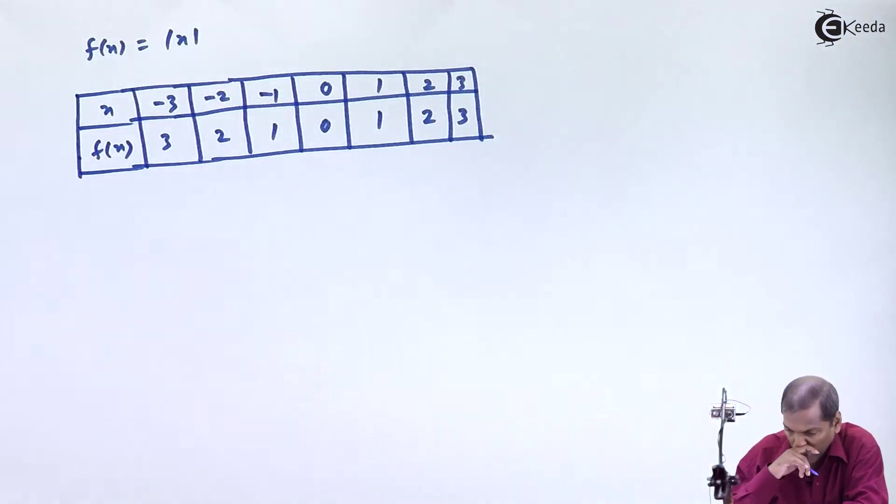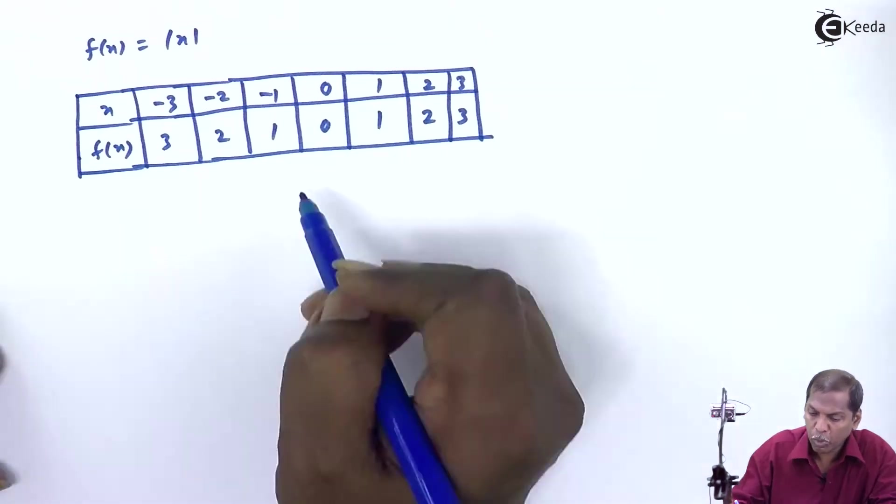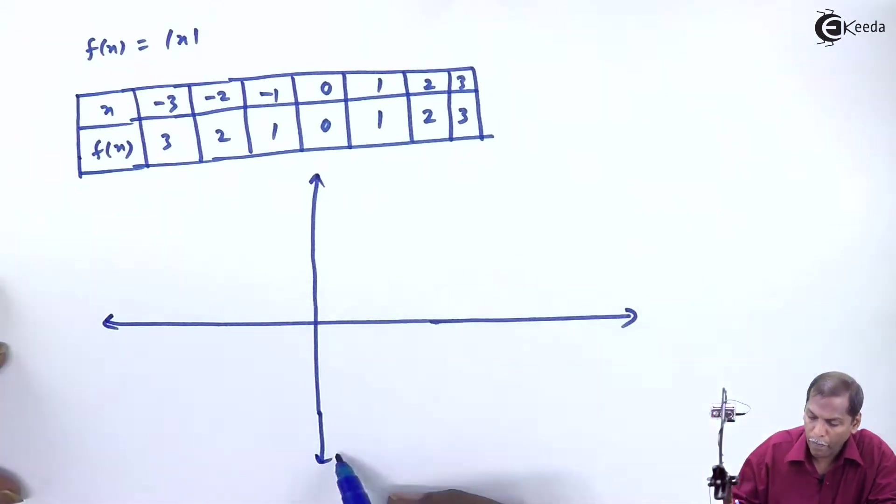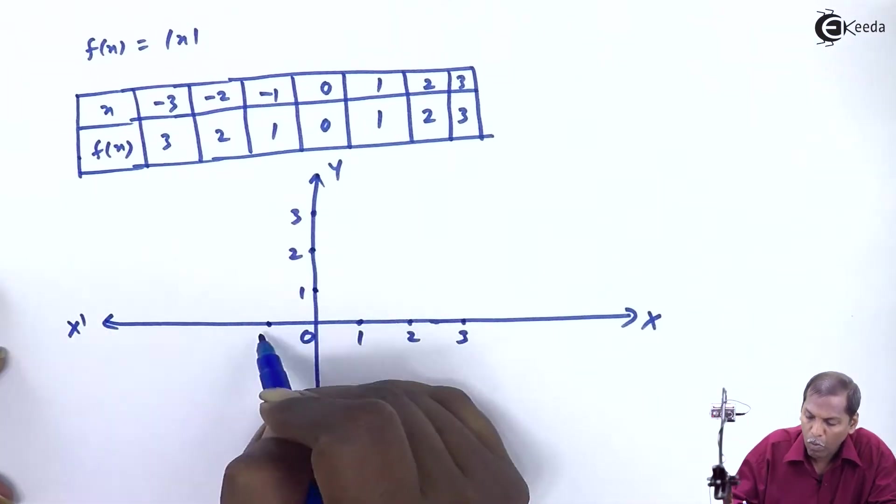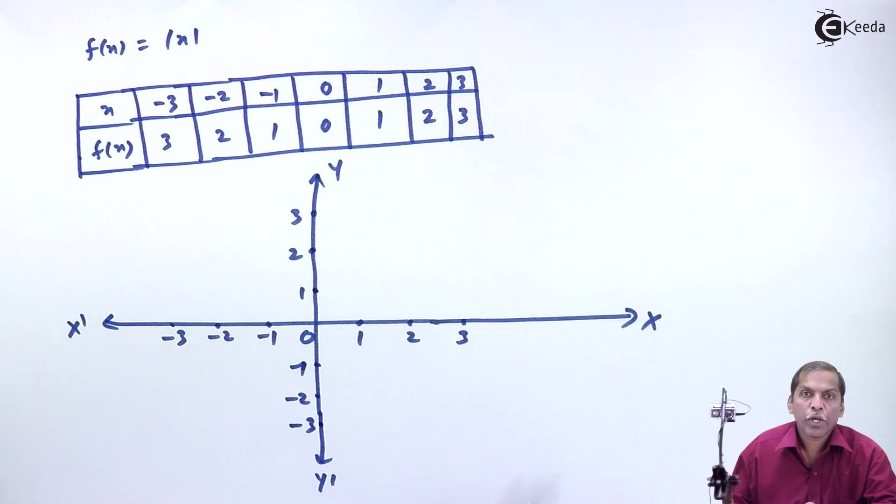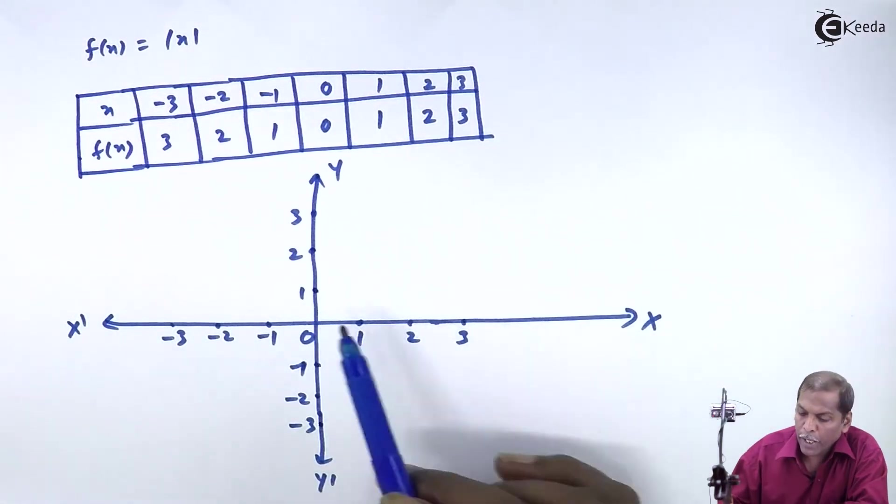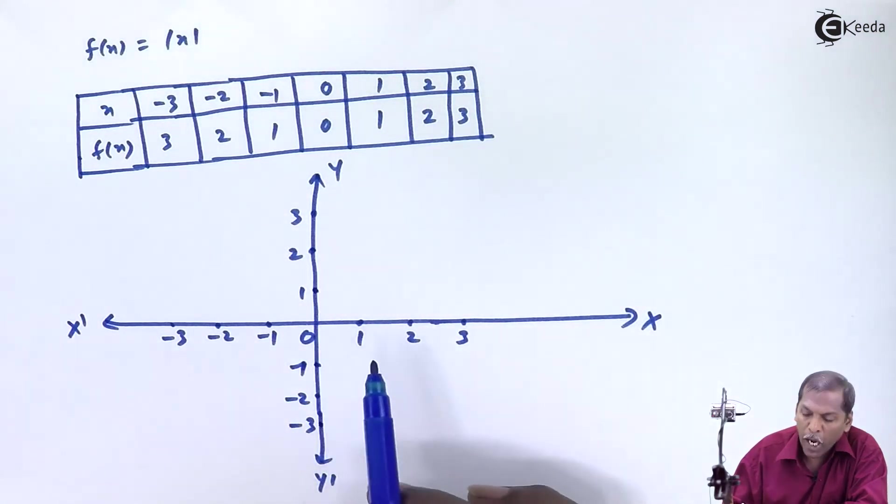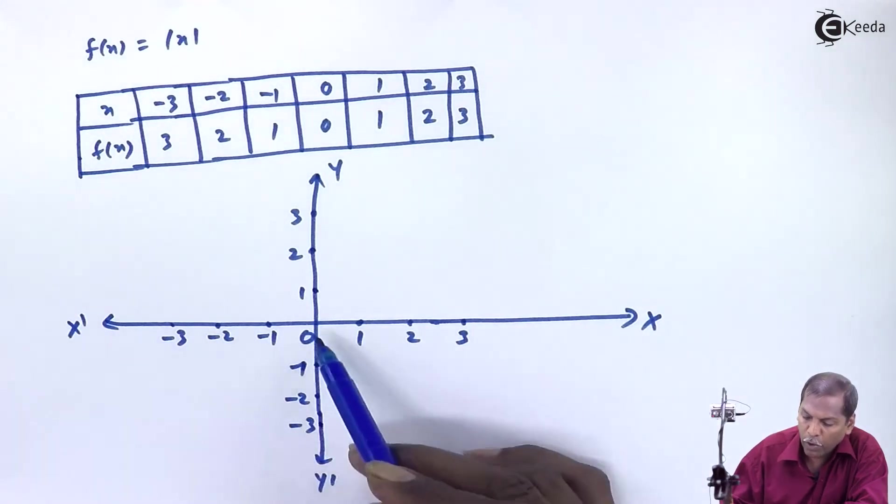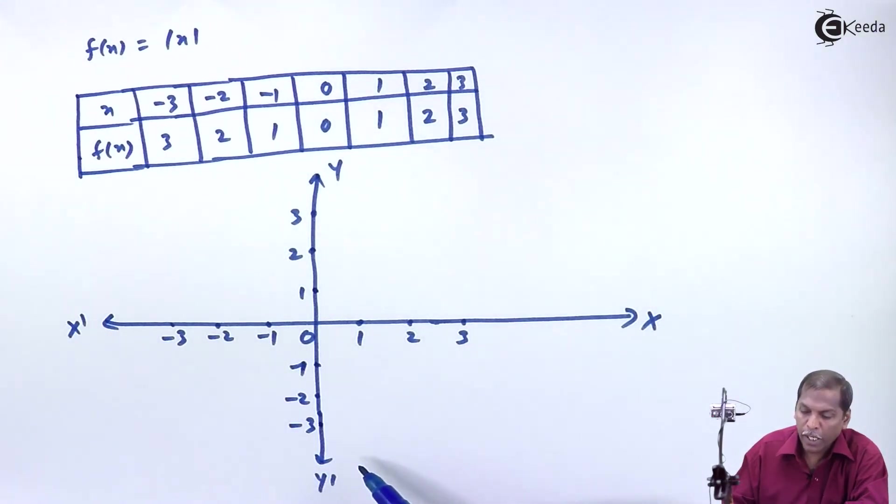Now we plot the graph. This is our coordinate axis. Ox and Oy here represent positive x and y axis respectively. On the other hand, Ox dash and Oy dash represent negative x axis and y axis respectively.